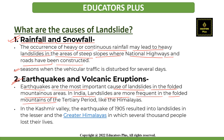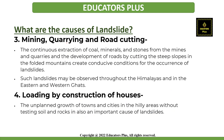Earthquakes are the most important cause of landslides in the folded mountainous areas. In India, landslides are very frequent in the folded mountains of the tertiary period like the Himalayas, and also in the Kashmir Valley. The earthquakes of 1905 resulted in landslides in the lesser and the greater Himalayas, in which several thousand people lost their lives. Volcanic eruptions also trigger landslides in mountainous regions. The next cause is mining, quarrying, or road cutting.